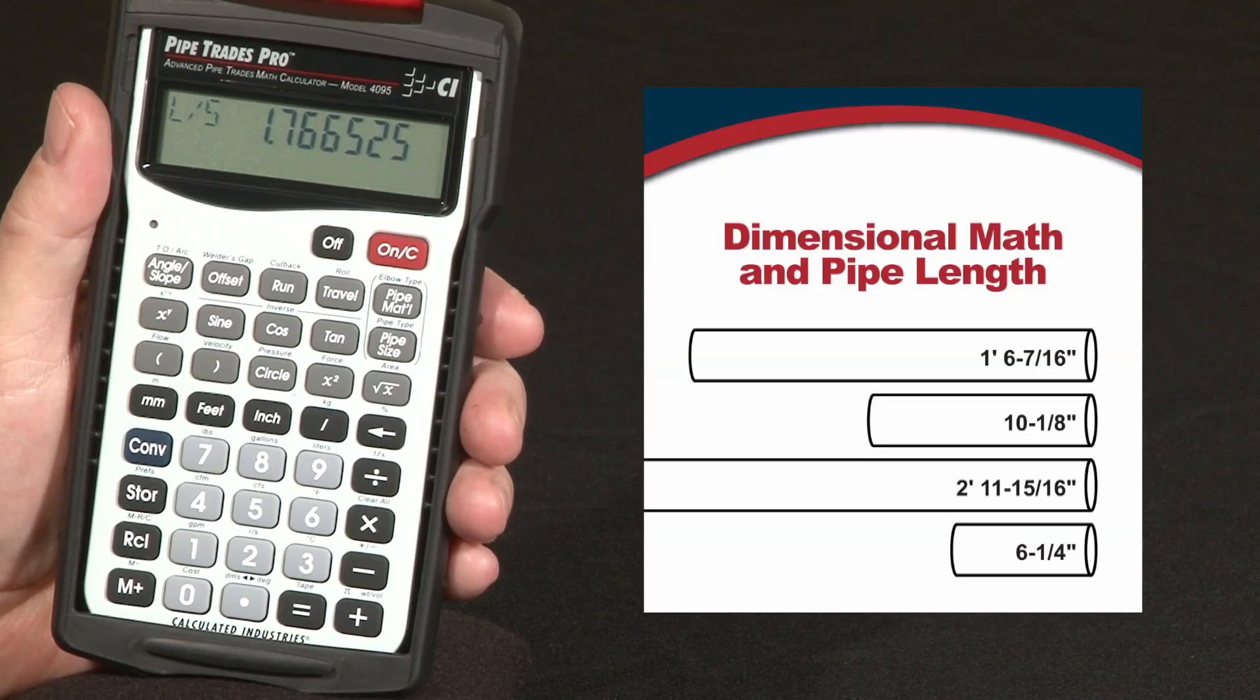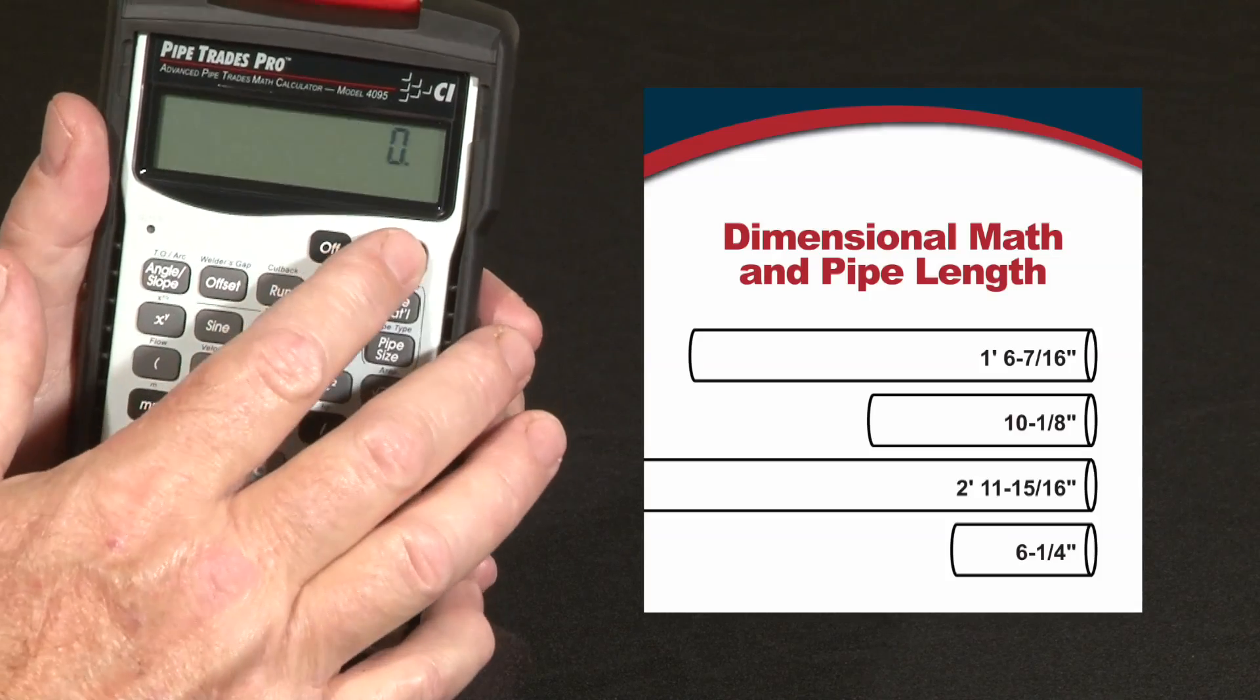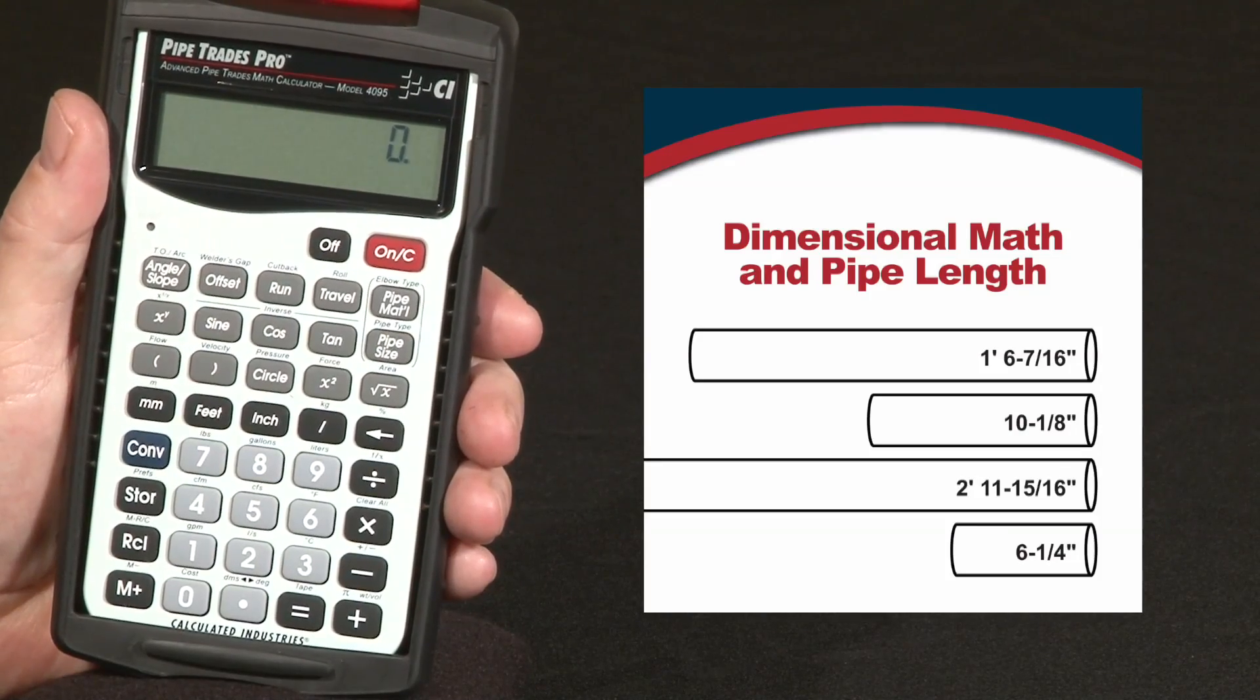Now let's say you have a bunch of oddball lengths of pipe that you want to weld together. How in the world are you going to add all those fractional lengths? Easy with the Pipe Trades Pro. Clear the calculator and enter the lengths just as you would say them.